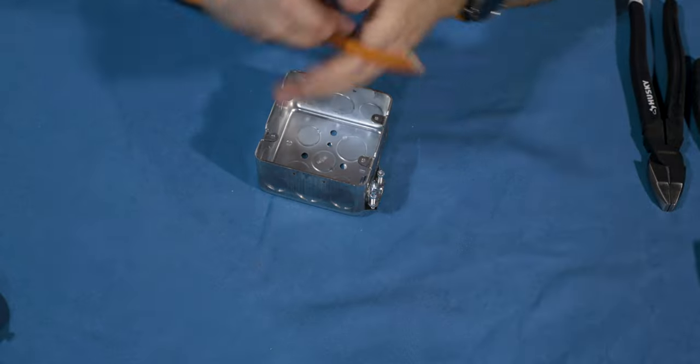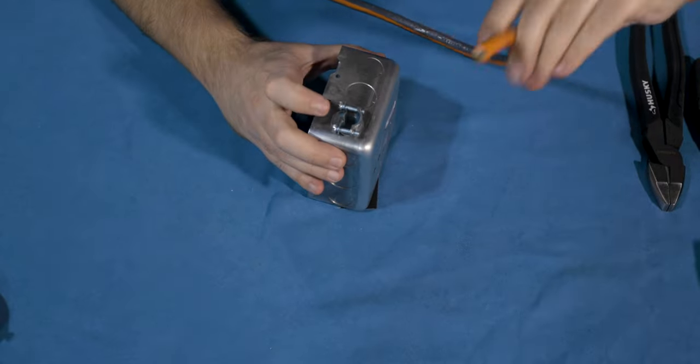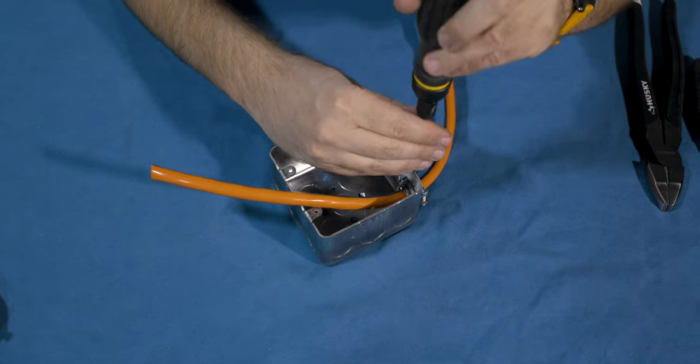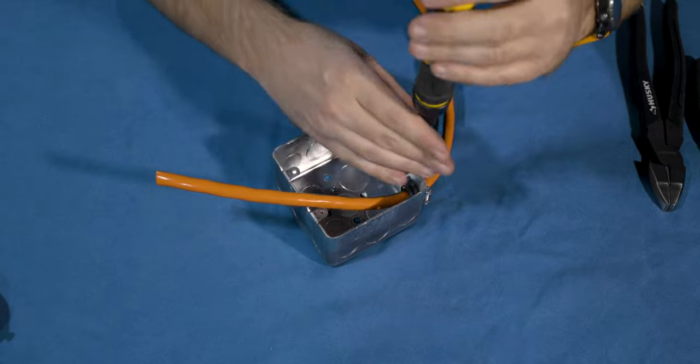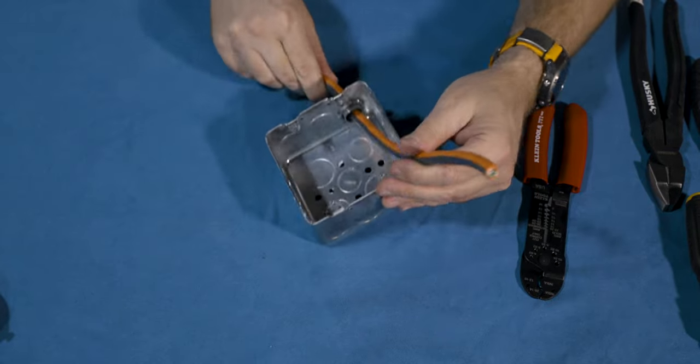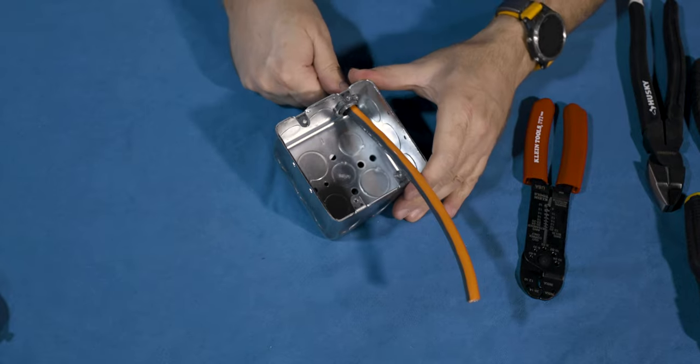So now we're going to take our cable and push it through here. Probably about that much. And then we're just going to take our screwdriver and clamp down on here. There we go. So we've got our clamp in. Cable's nice and secure now.